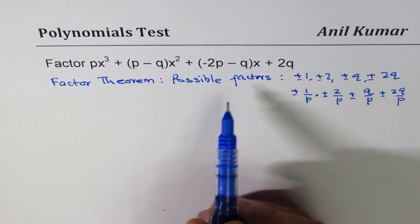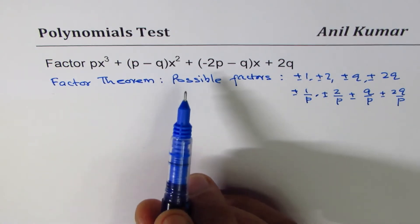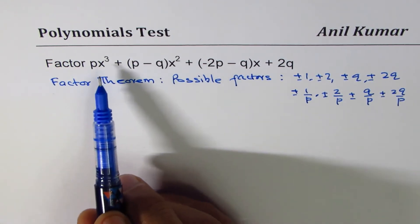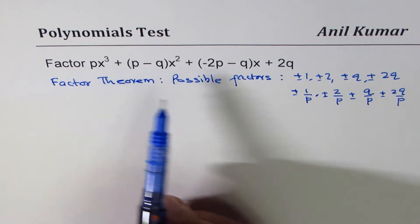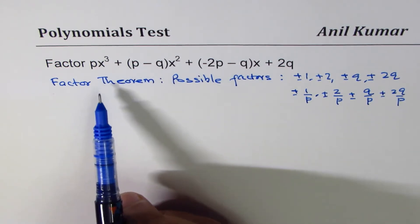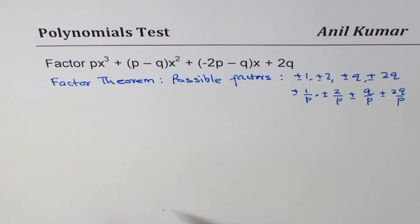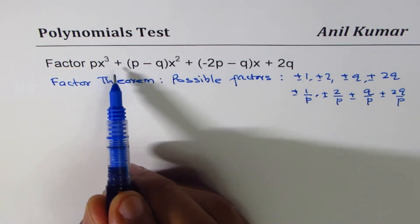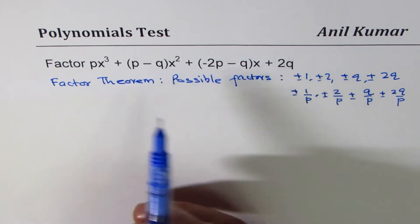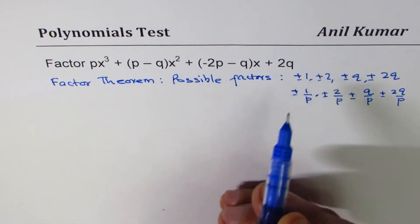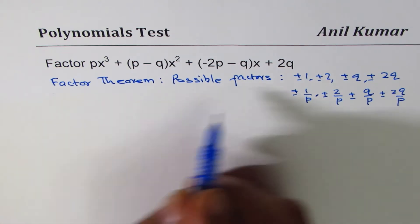So these are all the possible combinations which we need to try one by one and get the first factor. Since it is a cubic equation, once we get the first factor we could divide and factorize using our learnings from quadratic polynomial factoring. Now since we have all positive values, it's a good idea to start with negative value.